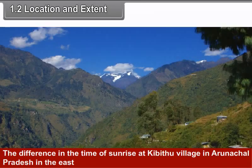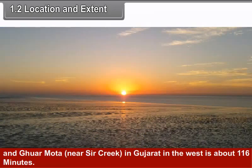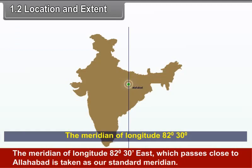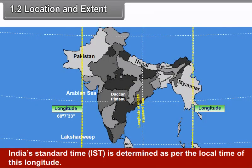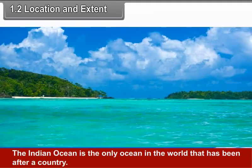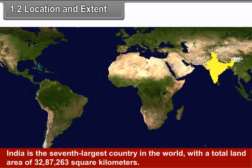Local time, sunrise, sunset, etc., are determined by longitudinal extent. The difference in the time of sunrise at Kibitu in Arunachal Pradesh in the east and Guarmota in Gujarat in the west is about 116 minutes. The meridian of 82 degrees 30 minutes east, which passes close to Allahabad, is taken as the standard meridian. India's Standard Time (IST) is determined as per the local time of this longitude.